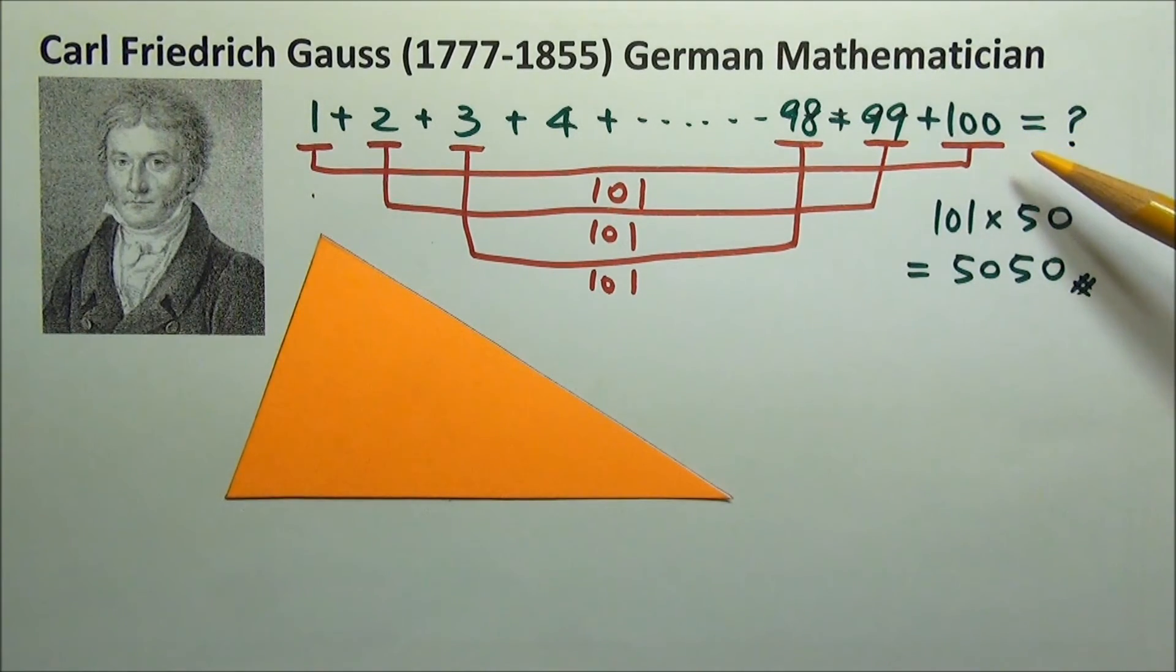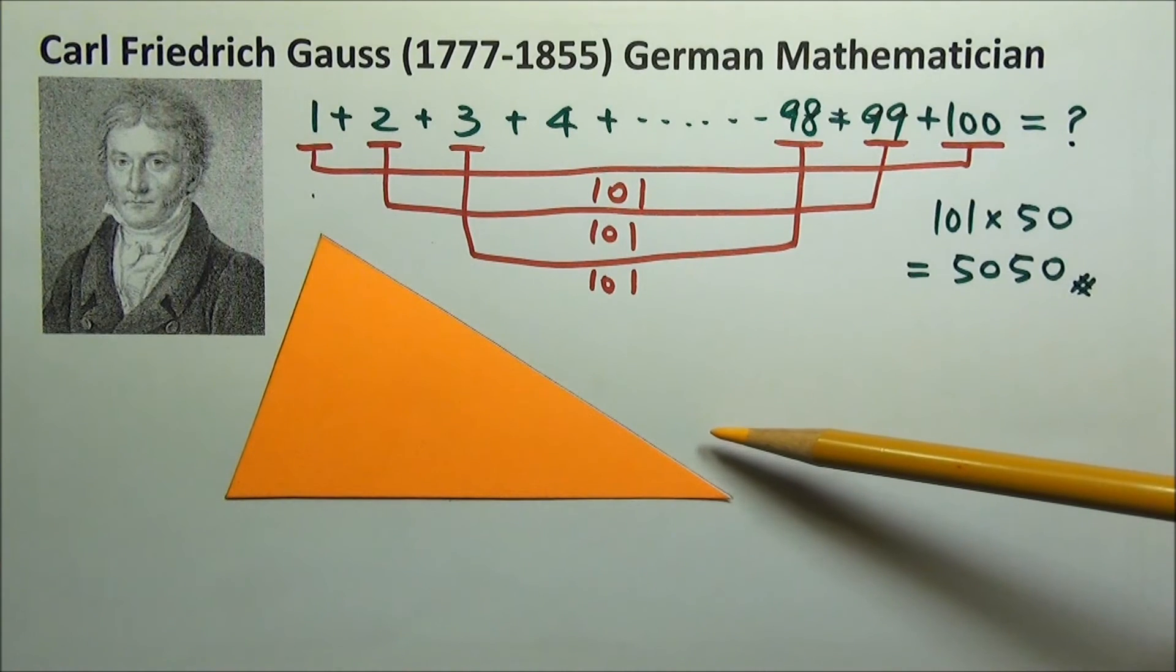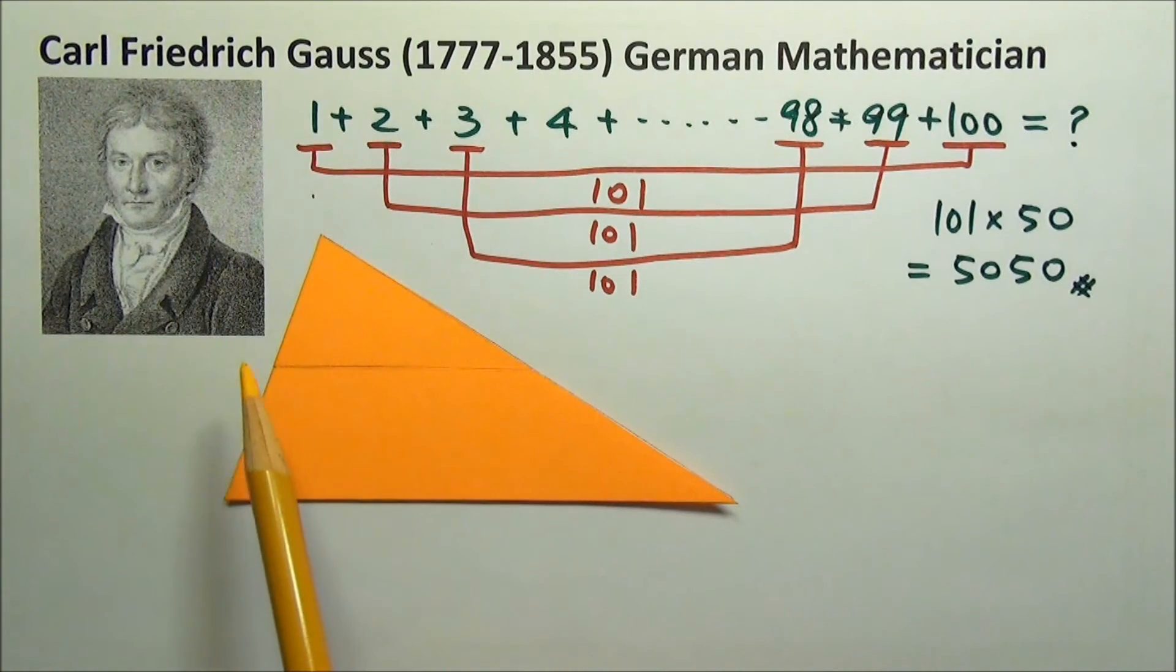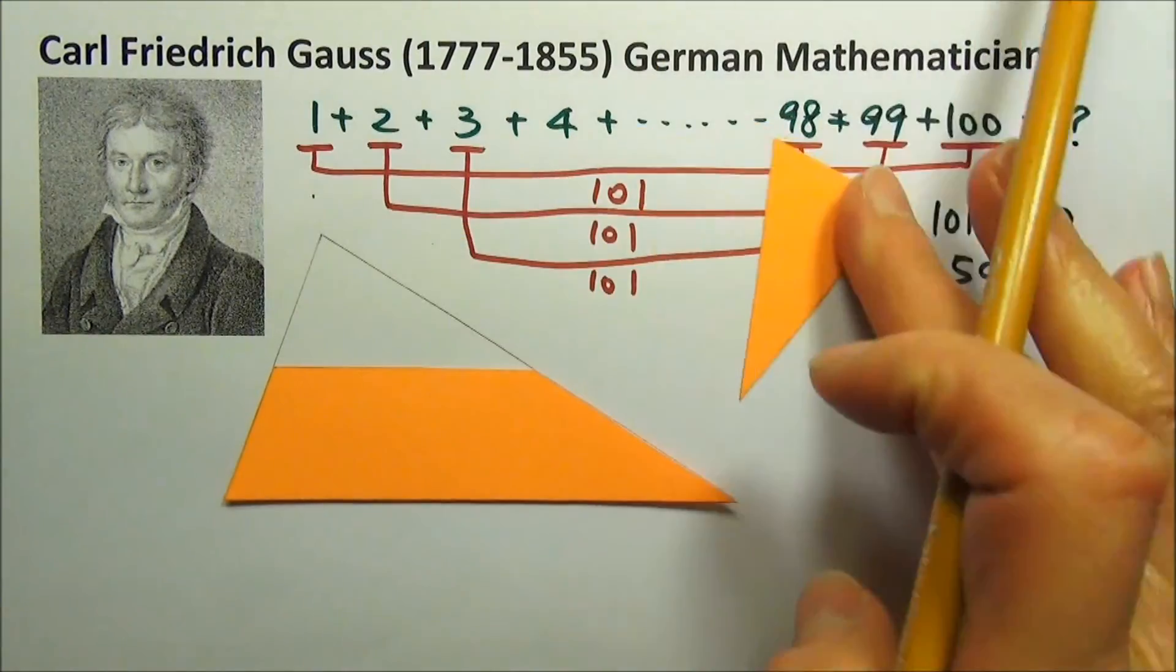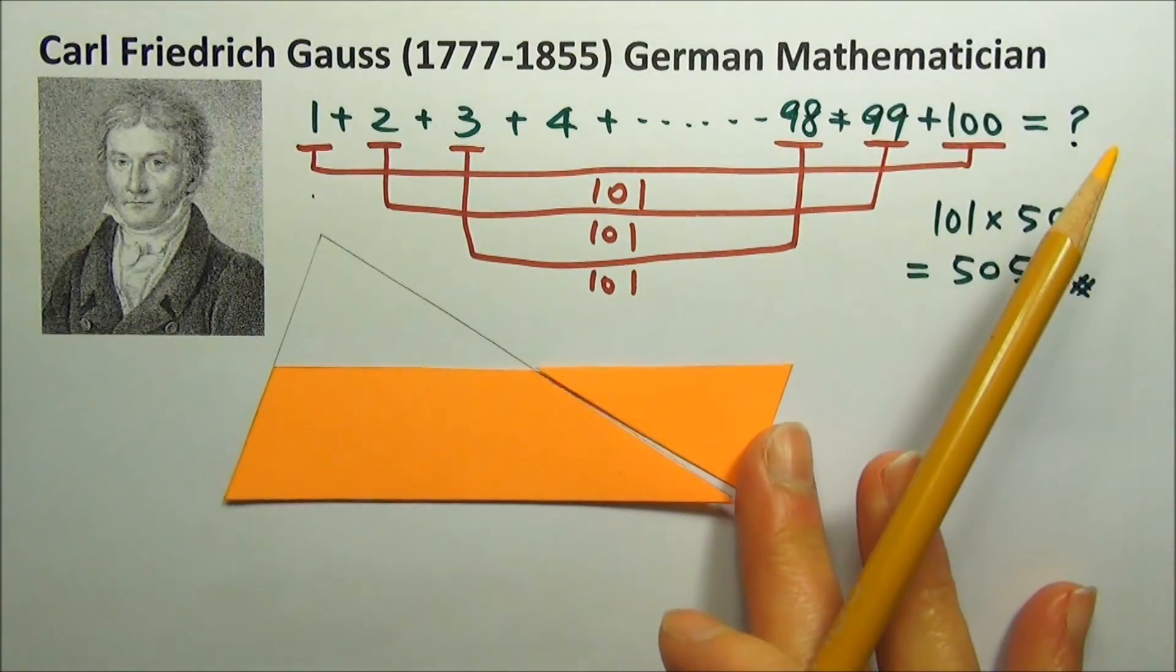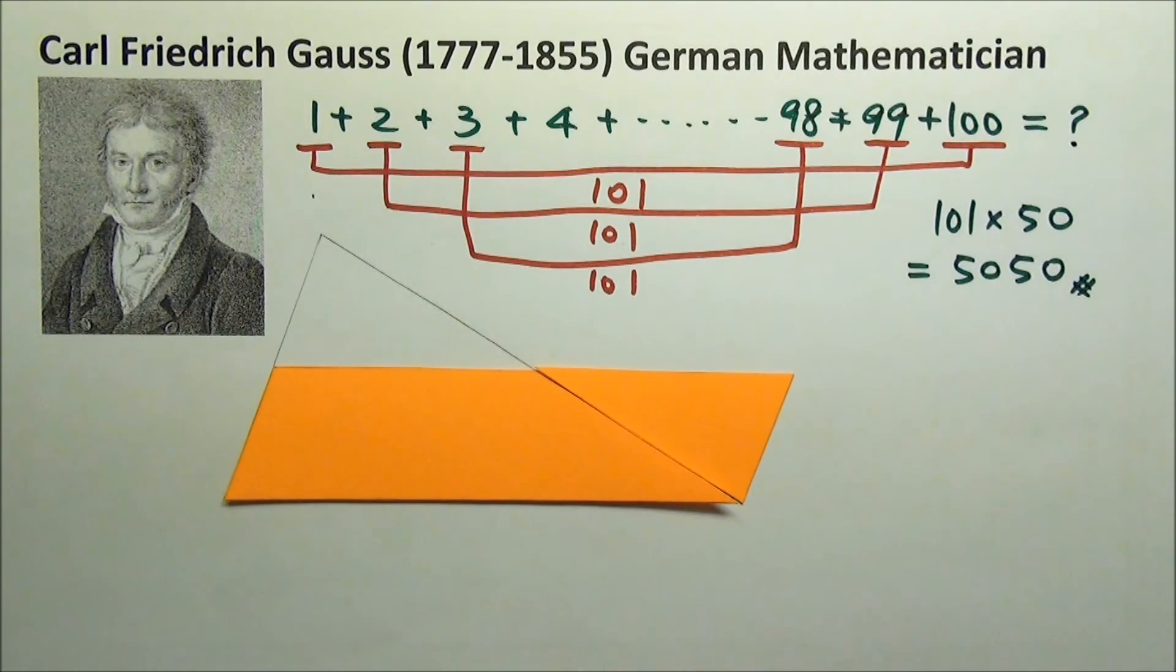This is also kind of like how we find the area of a triangle. We can cut this triangle at half the height and move this piece to here. We're pairing up the big with the small and the middle with the middle. So we have a parallelogram now.